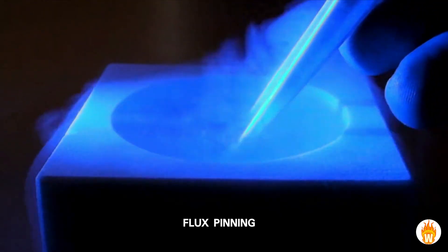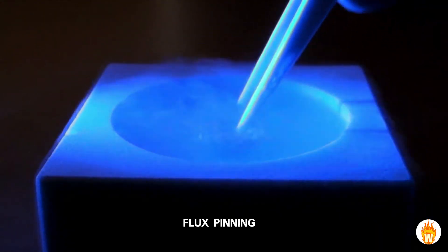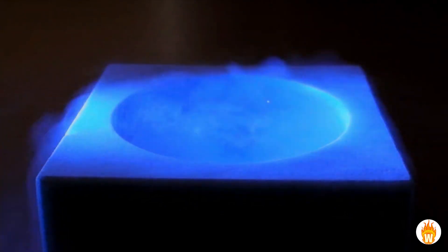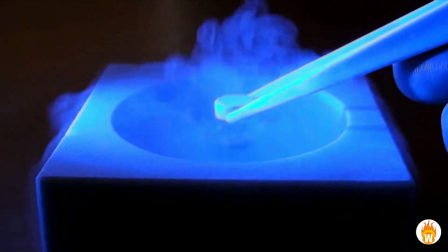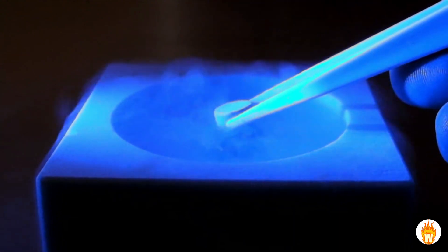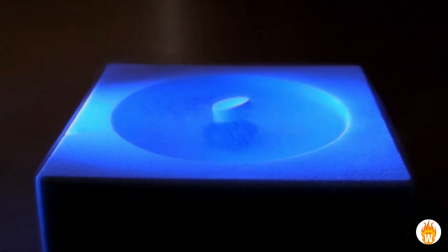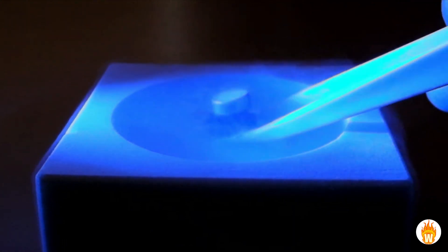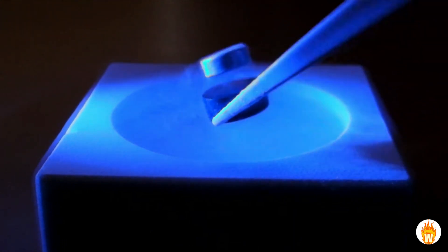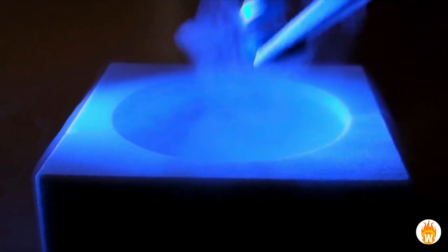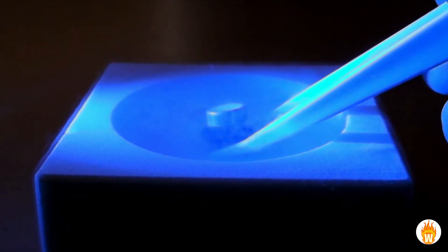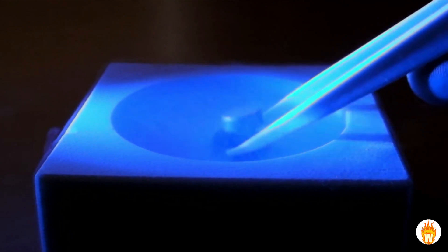This superconductor is slightly different. There are small impurities on its surface, which allow magnetic field lines to run through them. When cooled down to its superconducting temperature, those field lines become trapped. This locks the magnet in space above the superconductor. The magnet and the superconductor don't want to move relative to each other.